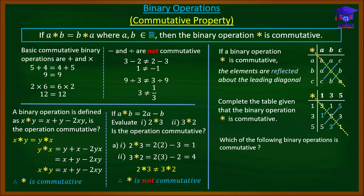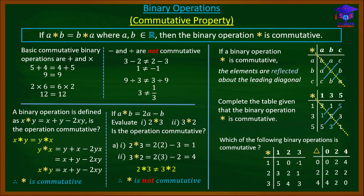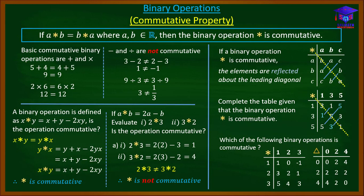Now, which of the following binary operations is commutative? For the first table: cover the leading diagonal and check whether elements reflect about it. We have three on one side — crossing to the other side, three is not there. That reflection does not hold, therefore this binary operation is not commutative.